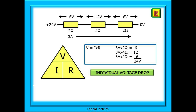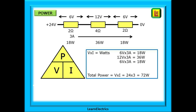Now that we have the individual voltage drops, we can work out the power or watts across each part of the circuit. Using the power triangle, power equals voltage multiplied by current — or watts equals volts times amps. The first resistance has six volts across it and three amps through it: six times three is 18 watts. The second gives 12 volts times three amps = 36 watts, and the last is six volts times three amps = 18 watts again.